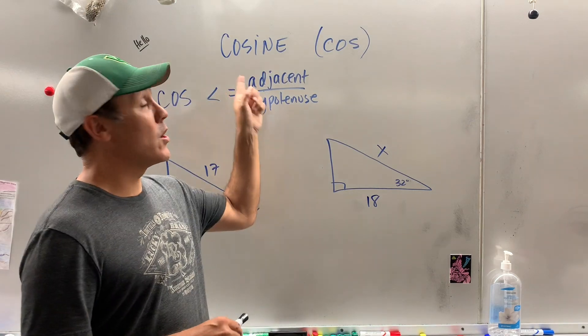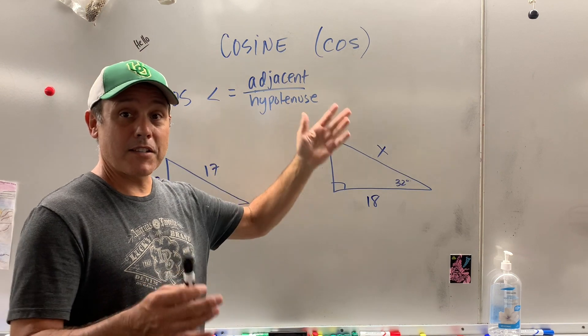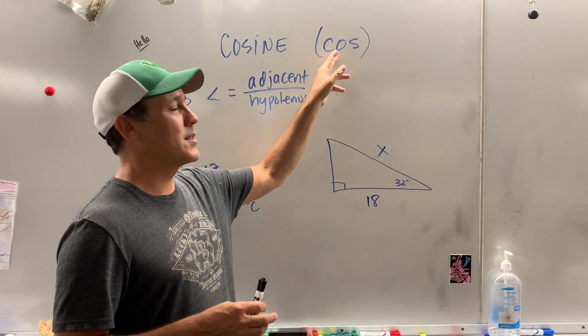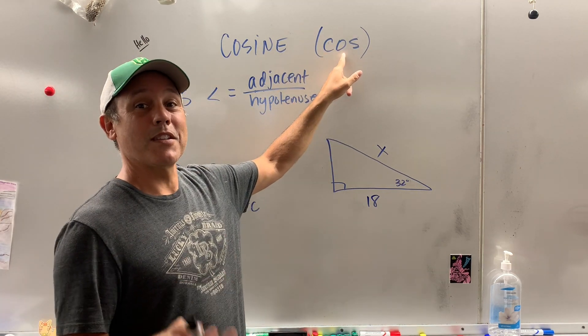All right, today we're going to learn about cosine. So this is cosine, and on a calculator, in a textbook, on a test, you're going to see COS. Please, don't say cos. So annoying. Okay, when you see that, you just say cosine.